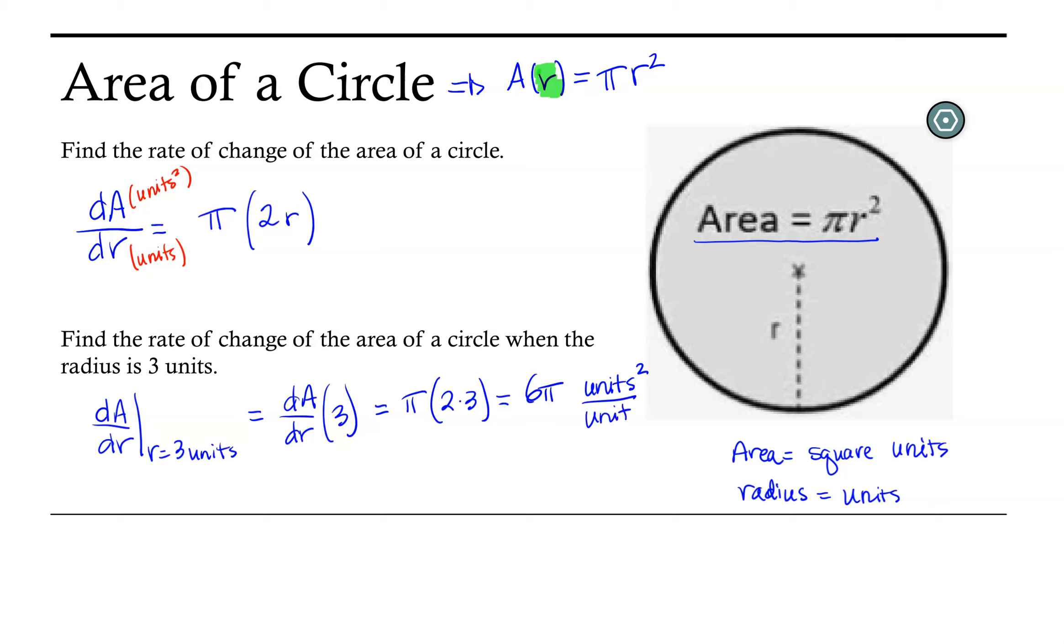So what does this mean? Well, this means that the area of the circle is changing by 6π units per unit of increase in the radius.